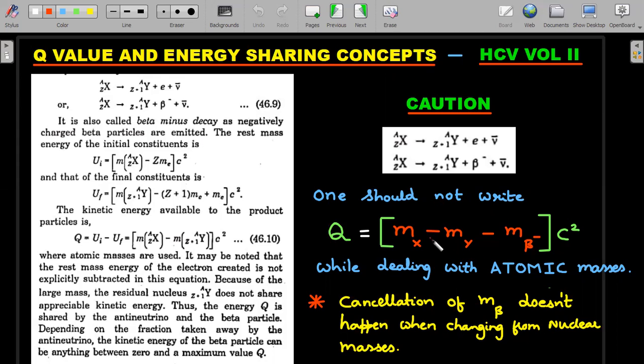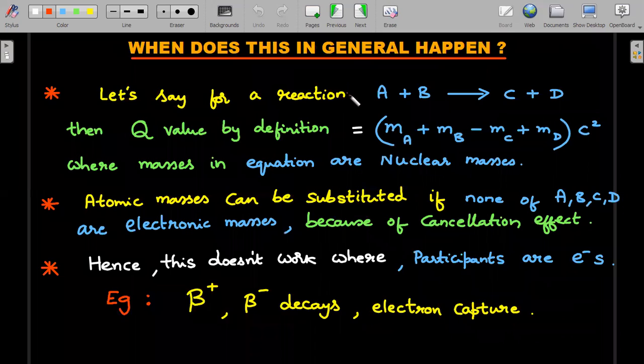The cancellation of this m_beta doesn't happen when changing from nuclear masses to atomic masses. Most of the times we don't do this. Whenever other reactions are given, not beta decays but other reactions, we directly take the atomic masses and subtract. We don't care so much about the addition and subtraction of the electrons. Why is that so? Let's try to investigate before solving the actual problem and then the six practice problems.